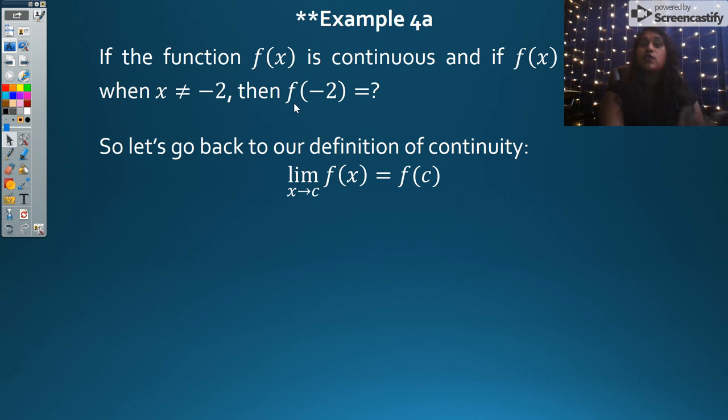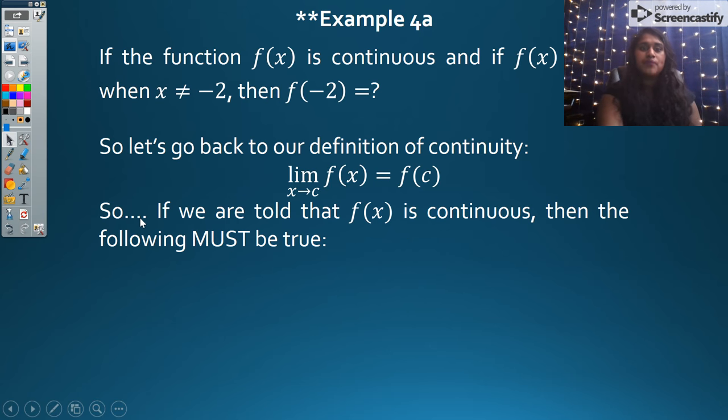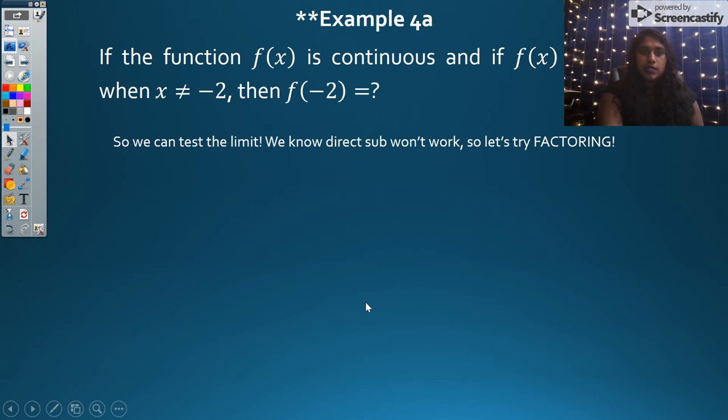Let's go back to our real definition of continuity. The limit as x approaches c has to equal function value at c. If we know it's continuous, that helps us out. We can test the limit because direct substitution won't work. We're going to try to factor. How do we solve our limits when we hit indeterminate? We start with factoring.